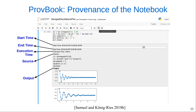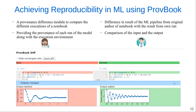With ProveBook, users can capture, store, describe, and compare the provenance of different executions of Jupyter Notebooks. ProveBook allows users to compare the results of the machine learning pipeline from the original author of the Jupyter Notebook in GitHub with the results from their own execution using ProveBook. In machine learning experiments, users need to figure out the reason behind different results due to modification in data or models or because of a random sample. Therefore, it is important to describe the data being used, the code and parameters of the model, and the execution environment to know how the results have been derived. ProveBook helps in achieving this reproducibility level by providing the provenance of each run of the model along with the execution environment.